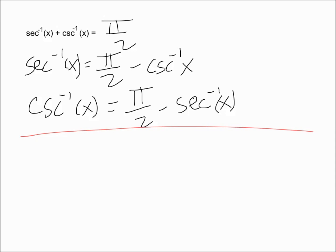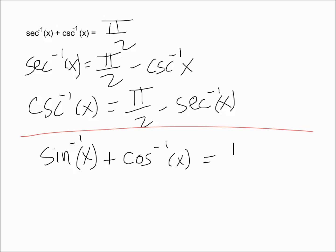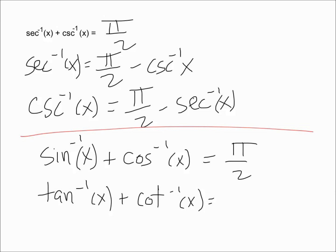The easy way to remember these: you write a function — say inverse sine — then you add 'co' to it to get cosine, the inverse cosine of x, and they are all equal to pi over 2. Do the same for tangent: add 'co' to get cotangent. And you can see the same goes for secant and cosecant.